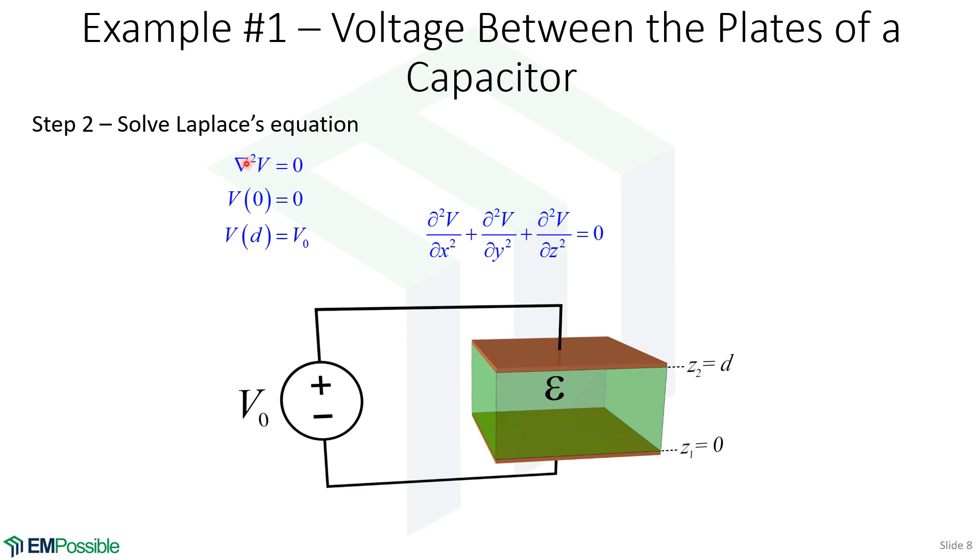So expanding Laplace's equation into our Cartesian coordinates, we get this. But looking at our problem, the electric potential is only going to vary in the Z direction, assuming the cross-sectional area of this is very big. We know that fringing kind of things are going to happen at the edges, but we're ignoring that. For the most part, the electric potential is just varying in this vertical direction.